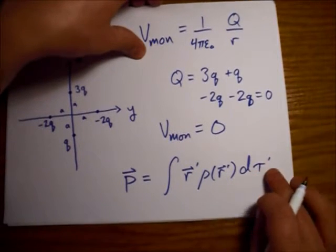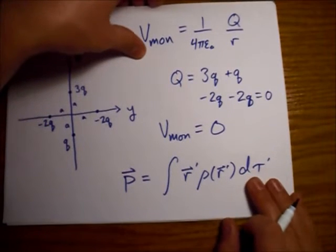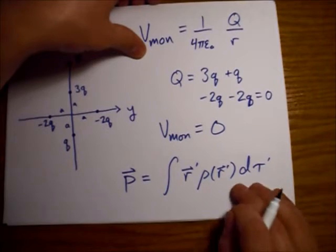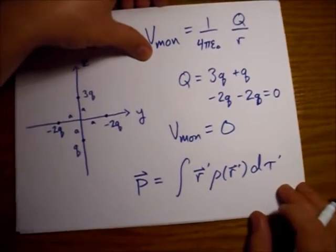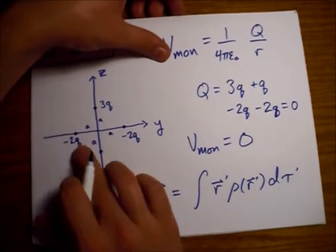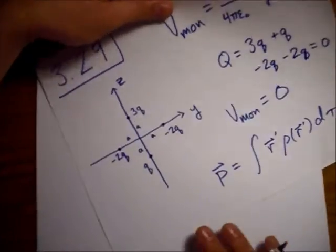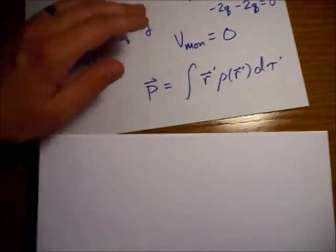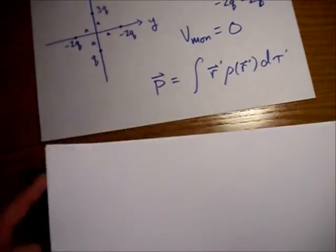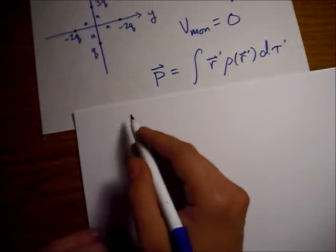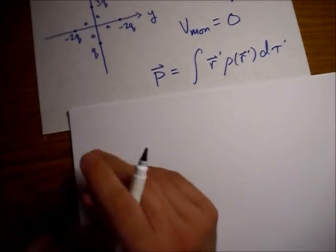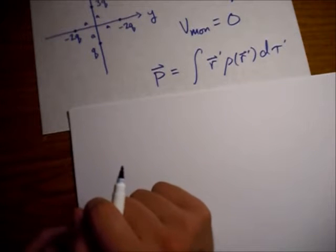Tau is the volume element in Griffith's book. So, there's actually a simpler version of this for discrete point charges, which we're going to use. So, this will simplify down to just a sum of four charges. And this is found in equation 3.100.